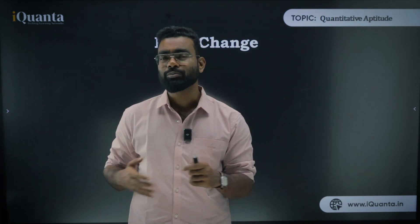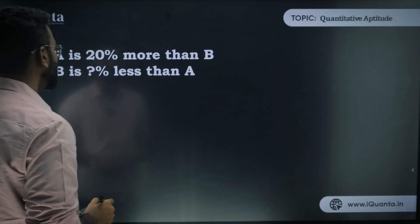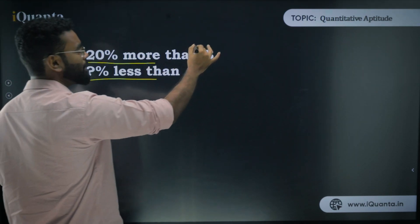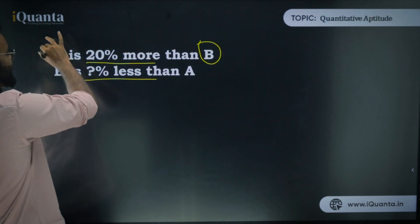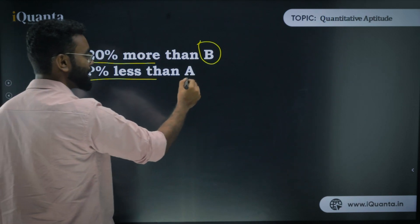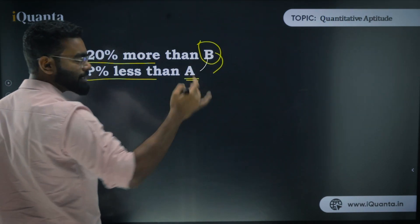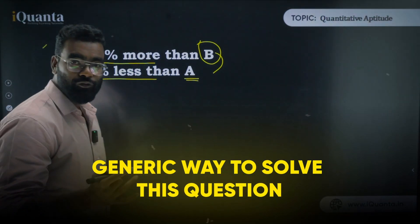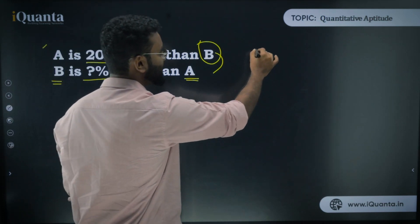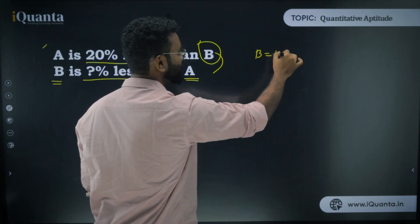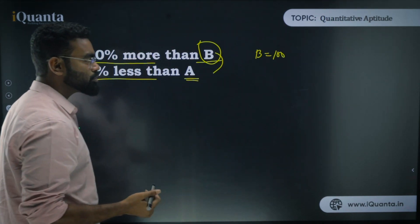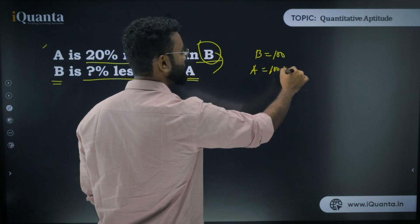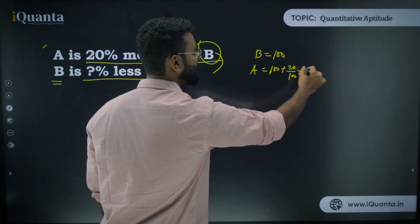Let's begin with this: A is 20% more than B, then B is what percent less than A? My base is changing from B to A — that's why it is called base change. The generic method: take B as 100, because the base in the initial question is B. If B is 100, then A is 100 + 20 = 120.